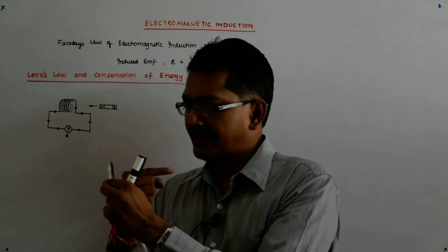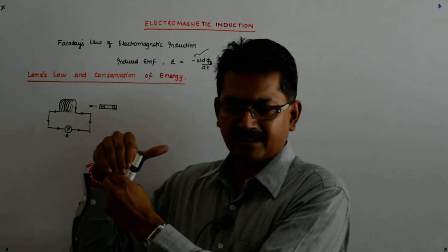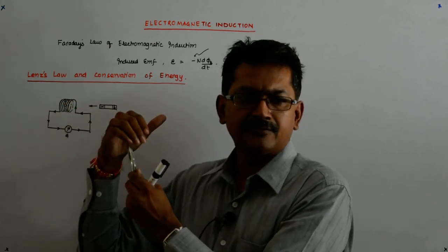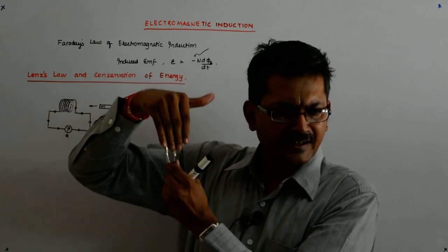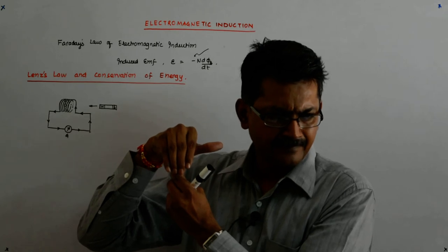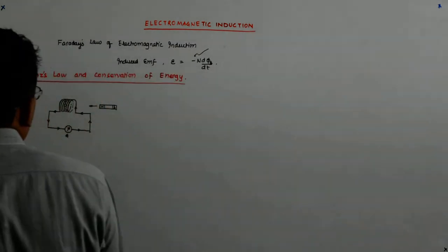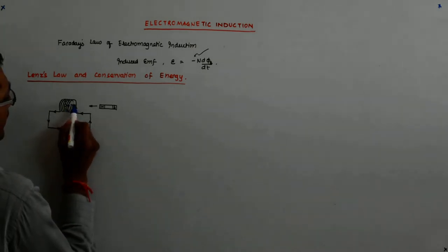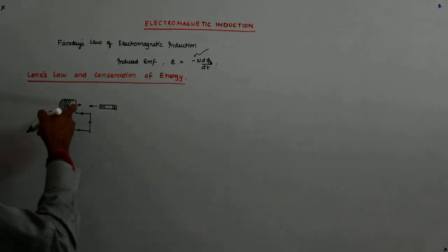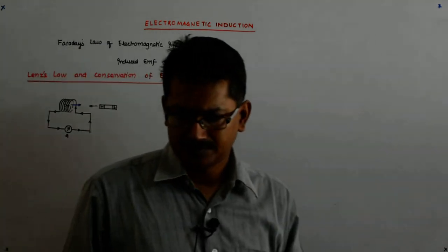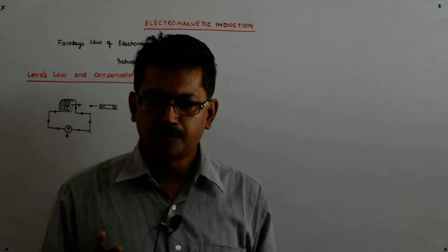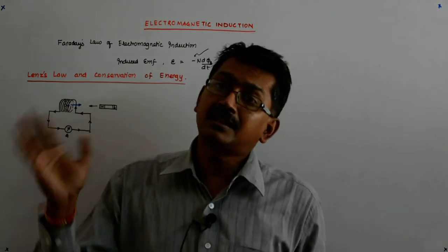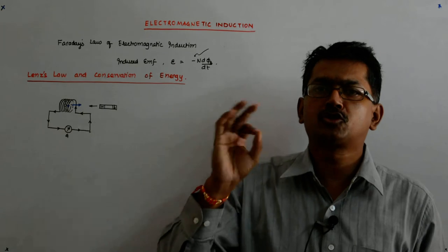To create a field opposing the magnet's field, this coil will have to carry a current in a specific direction. The part of the coil nearer to you will have to carry current going in the downward direction. Only then will the current loop produce a field like that and oppose the field you are trying to push in this direction.